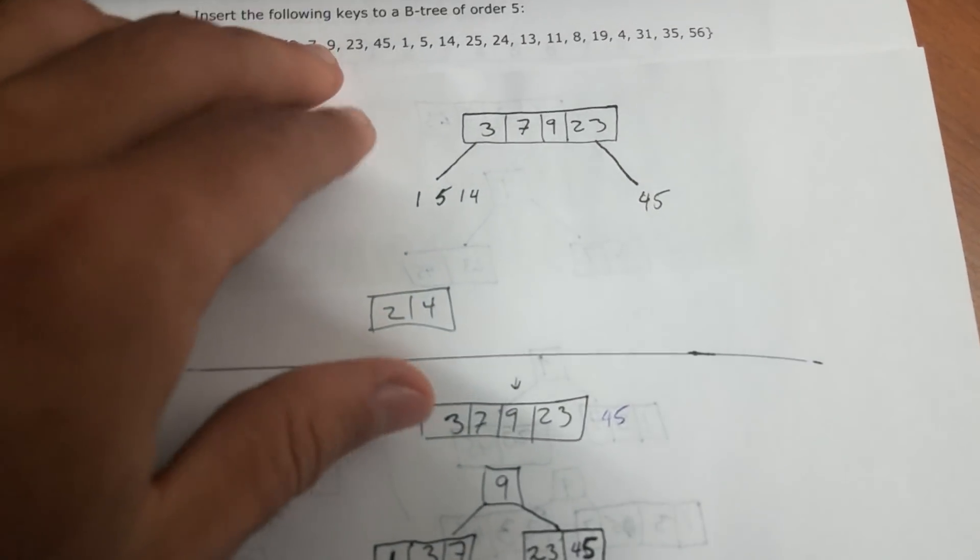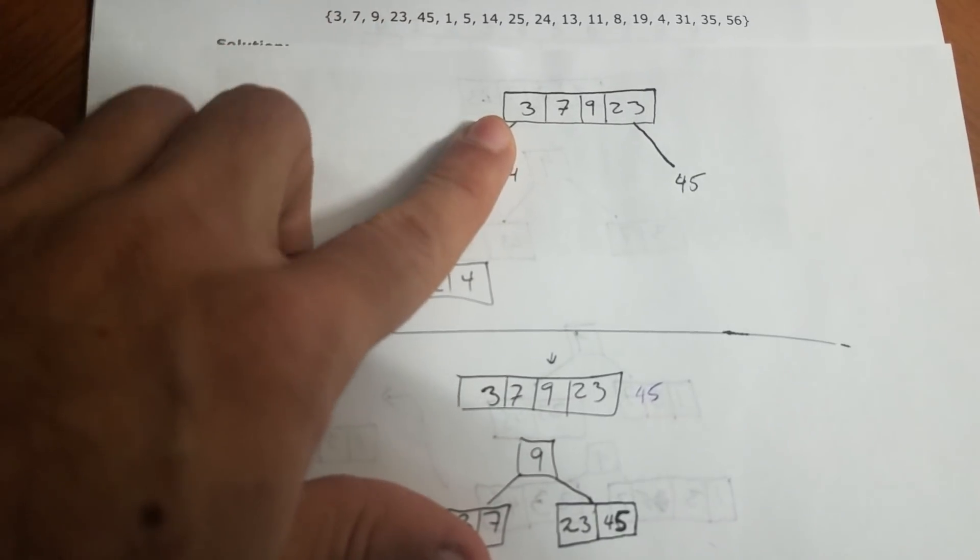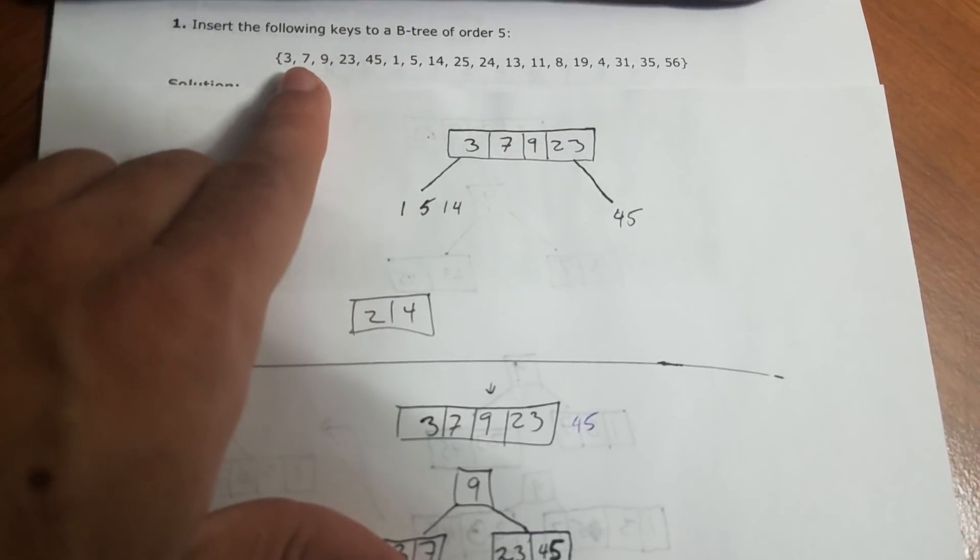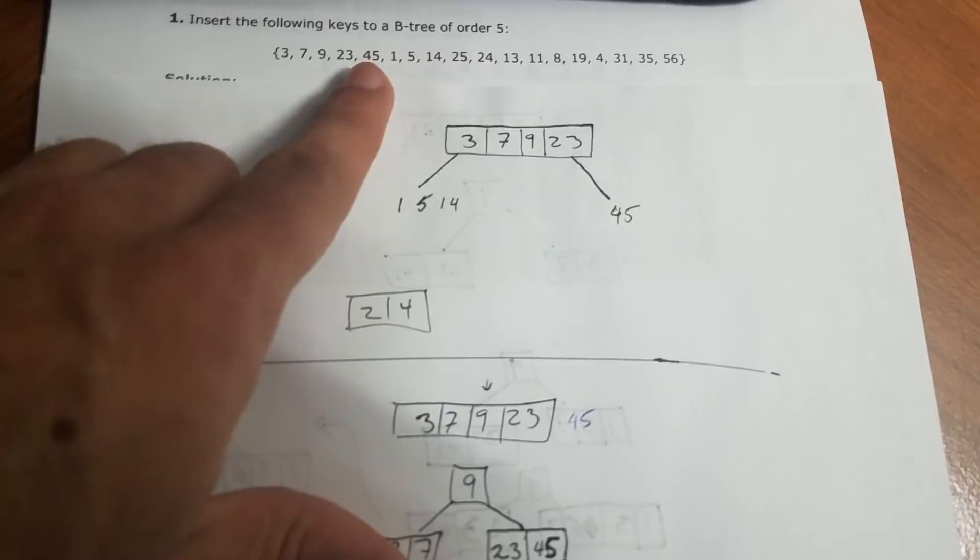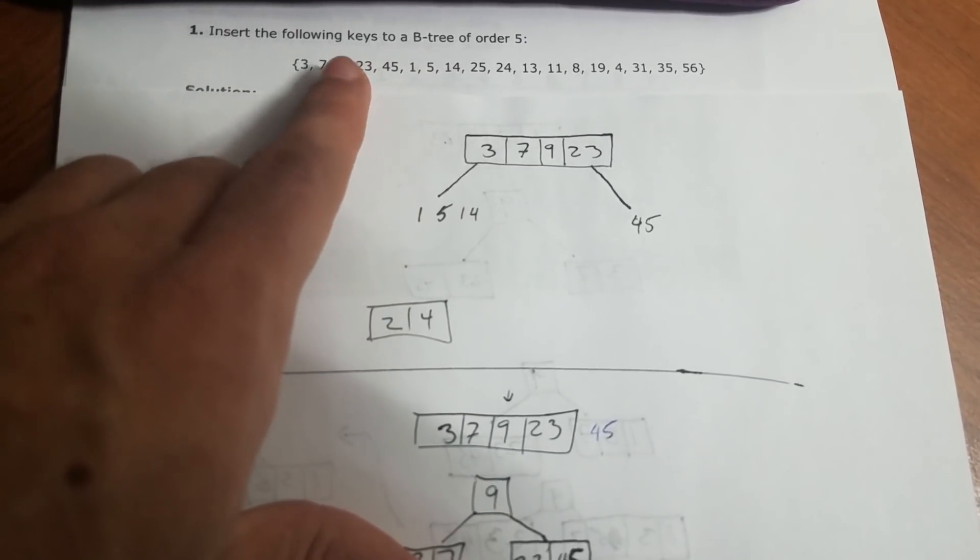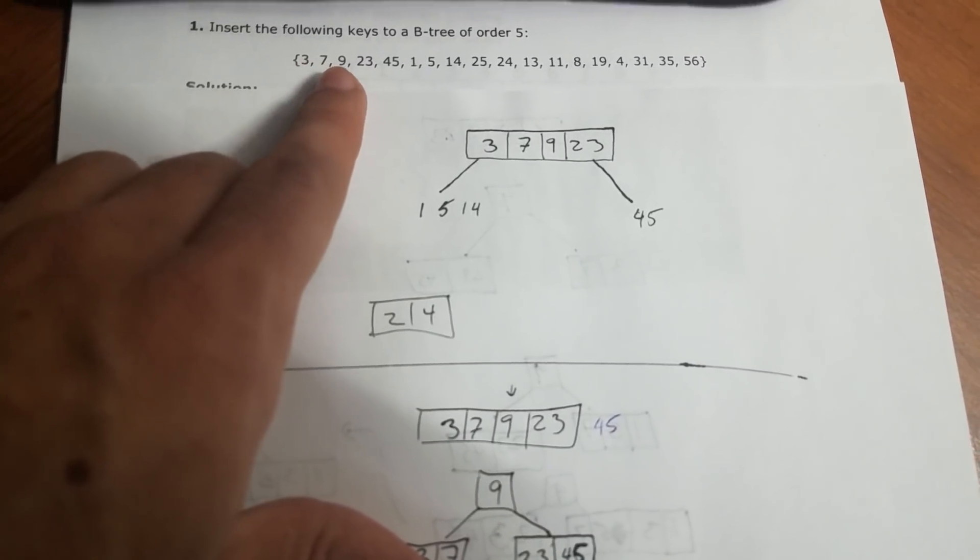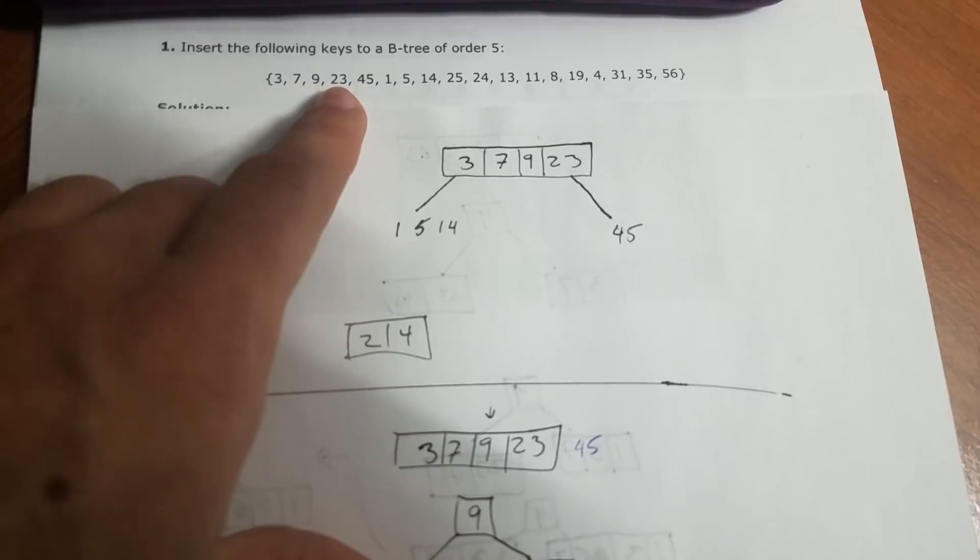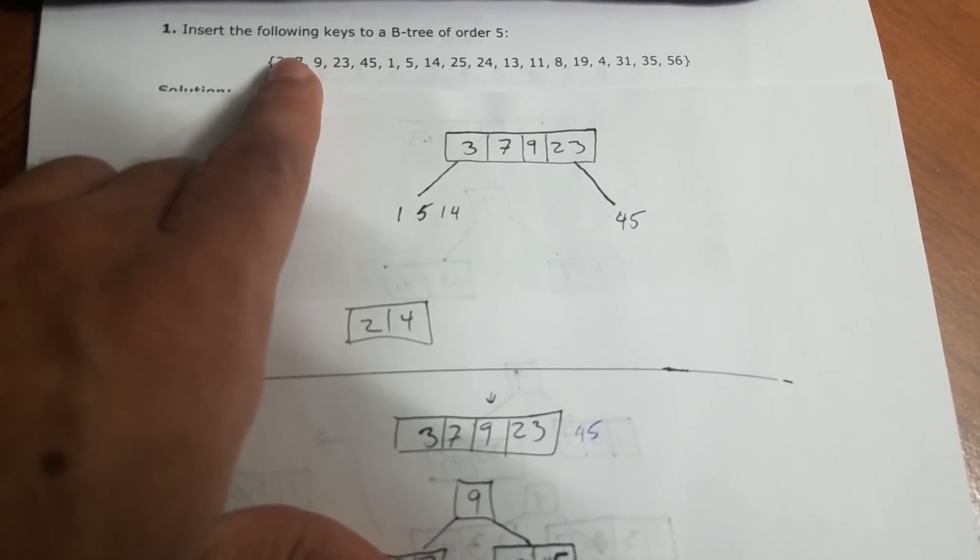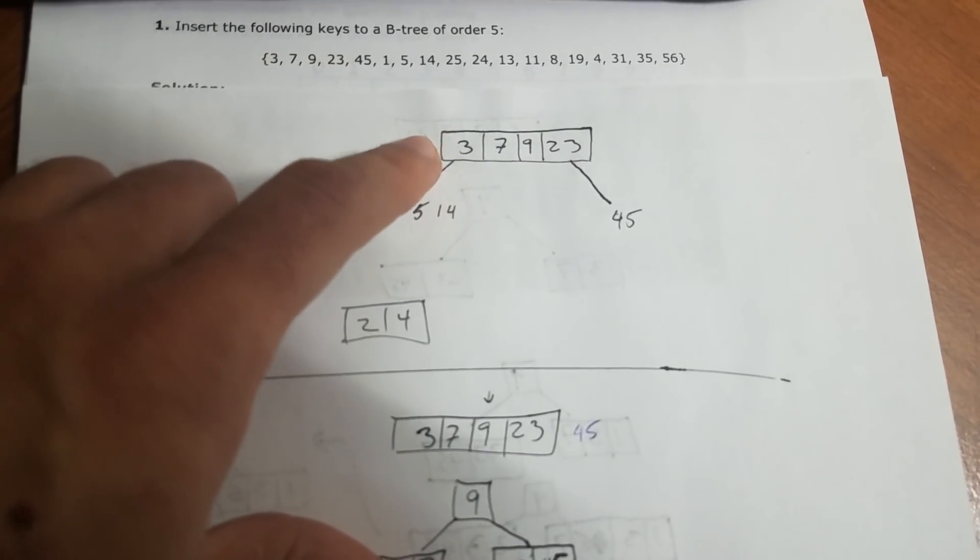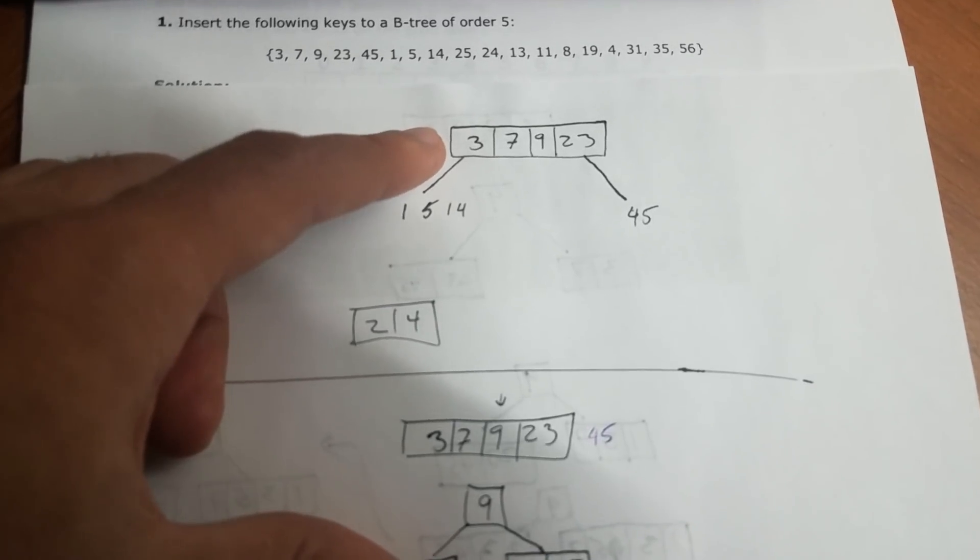Alright, so for the root, we're going to take the first four elements of the key in order. So we have 3, 7, 9, and 23. They're already sorted. If you have, for example, 23 here, it wouldn't matter. You still would put it like this. It would have to be sorted.